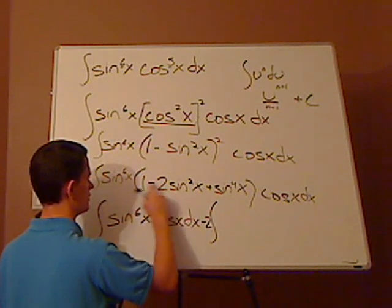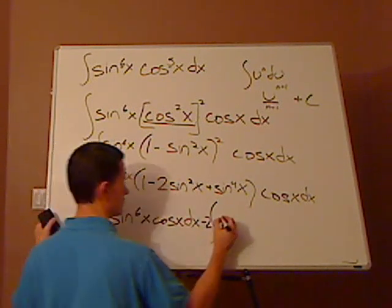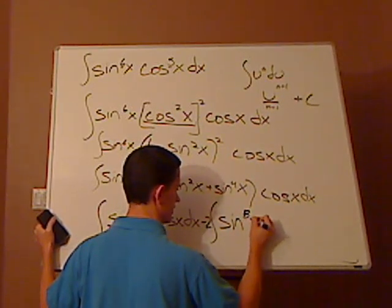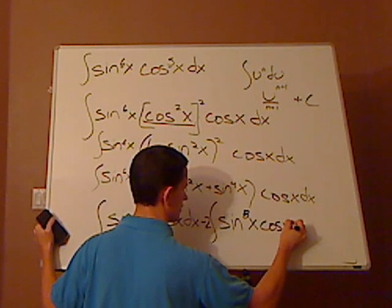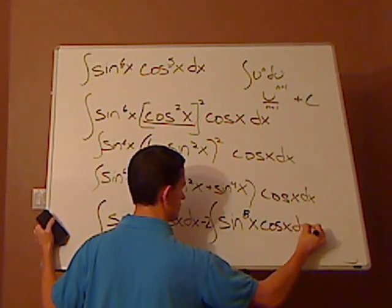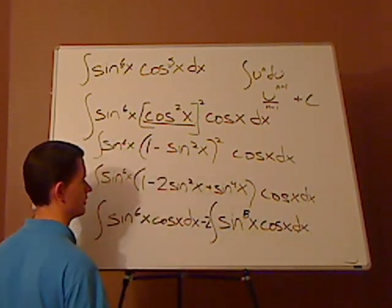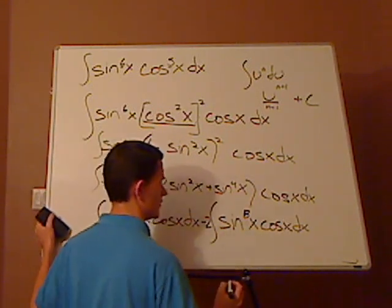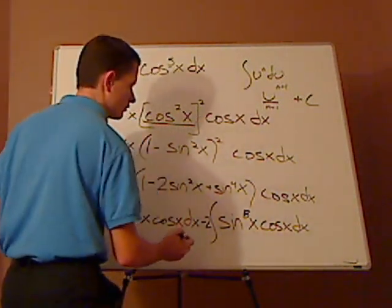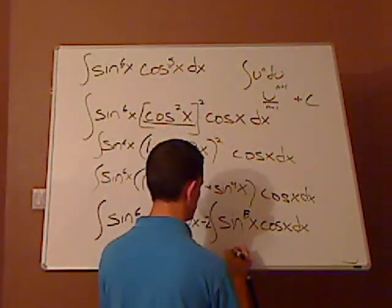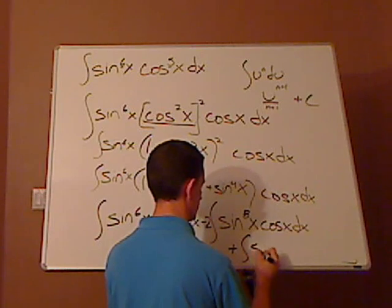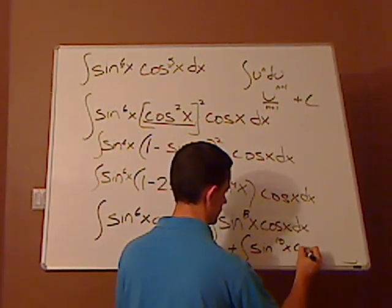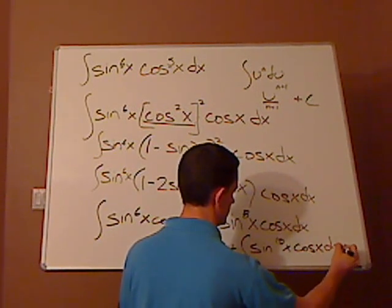So you have the integral of sine to the 6th x cosine x dx minus the integral. It's going to be, I'm going to put that 2 in front, because you can kind of ignore the constant. That would be sine 6 and then 2, so it would be sine raised to the 8th x cosine x dx.